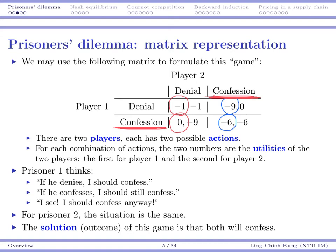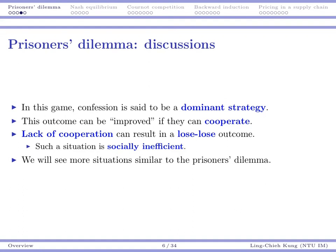This is one of the hearts of game theory or game theoretic analysis. If it is possible for these guys to cooperate, they may do better. However, because now they are making decisions individually and selfishly, they are actually doing worse. As a summary: in this game, confession is said to be a dominant strategy. The outcome can be improved if they can cooperate, but unfortunately here they do not. So we say that's a lose-lose situation. If they can cooperate, we will get win-win. We say this is socially inefficient because this is not the best they may get if they cooperate.